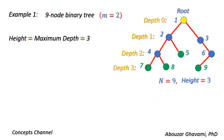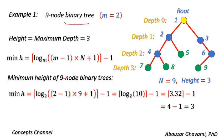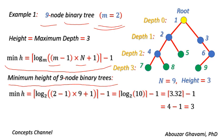As an example, let us consider a nine-node binary tree. The height of this binary tree is equal to its maximum depth, which is equal to 3. In a binary tree, m is equal to 2. Substituting m with 2 and n with 9 in the equation for minimum height of n-node m-ary trees, we calculate the minimum height of 9-node binary trees as ceiling of log base 2 of (2 minus 1) times 9 plus 1, minus 1.